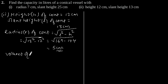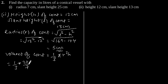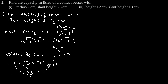Volume of cone will be 1/3 × π × r² × h. Putting the values, we get 1/3 × 22/7 × 5² × 12, which simplifies to 4 × 22/7 × 25, giving volume of cone as 2200/7 cubic centimeters.